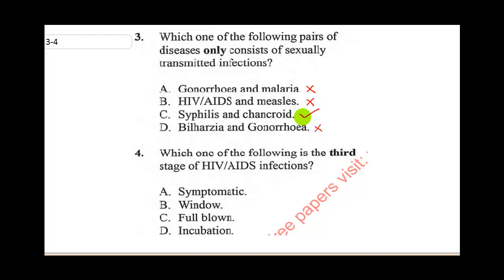Question four says: which of the following is the third stage of HIV infection? If you study the HIV life cycle, it has about four stages. The last stage is the full-blown stage. The first stage is the incubation stage, followed by the asymptomatic stage, also known as the window stage. The third stage is the symptomatic stage — that is when you start displaying symptoms. So the correct answer is the symptomatic stage.